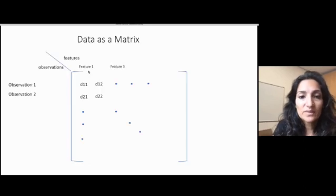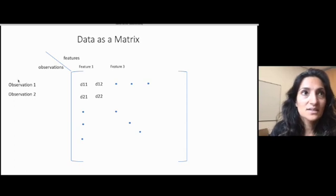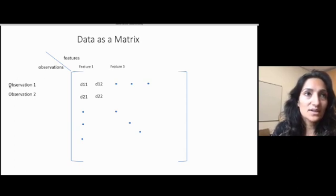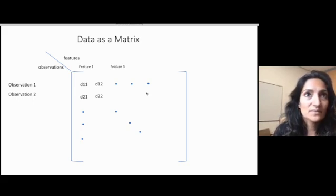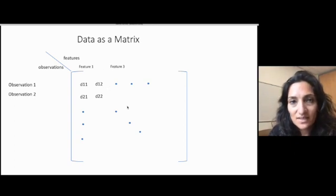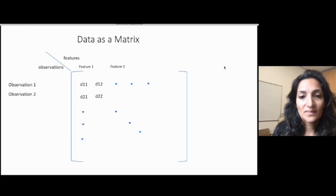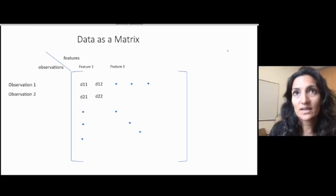To begin with, we usually have a raw representation of the data as a matrix. In this matrix, the rows correspond to the observations or the entities that were measured. The columns correspond to the features or the aspects of the entity that are being measured. However, this is usually not a super intuitive way of looking at the data.